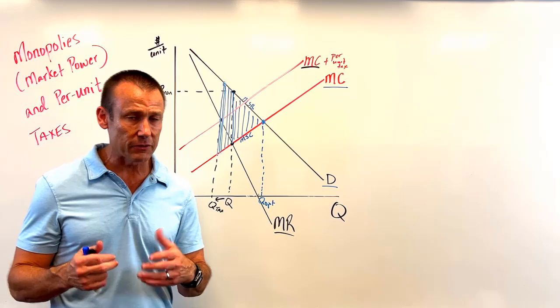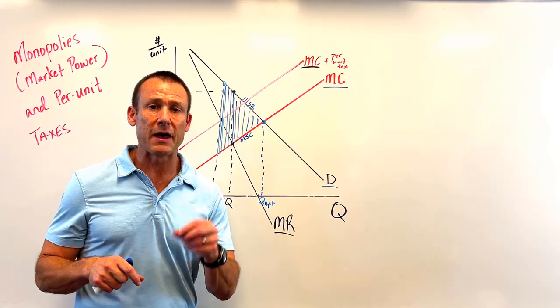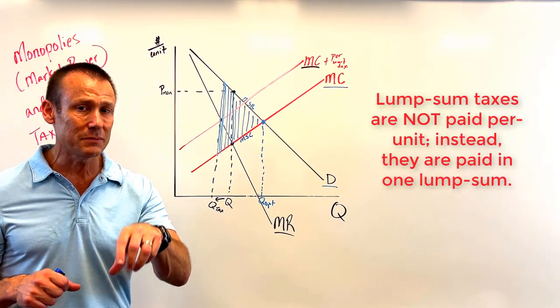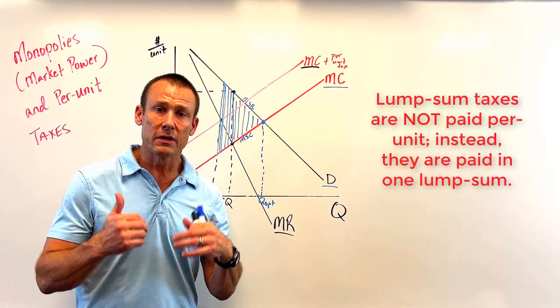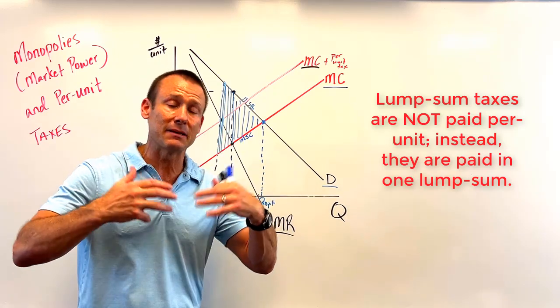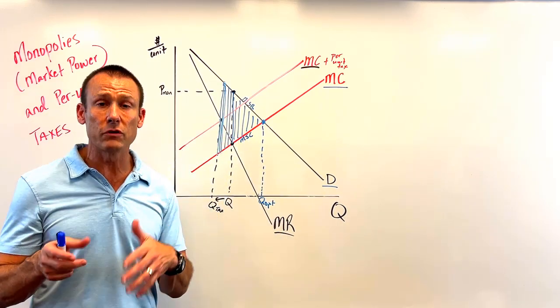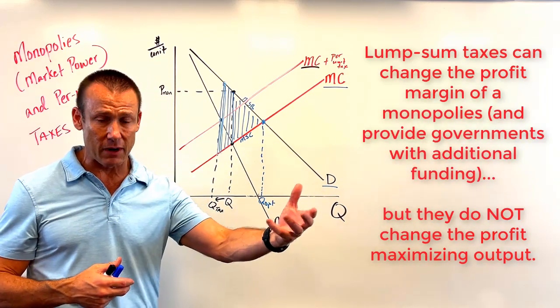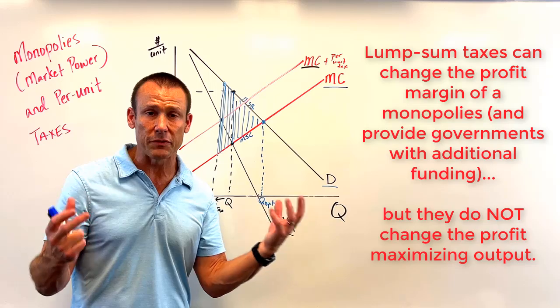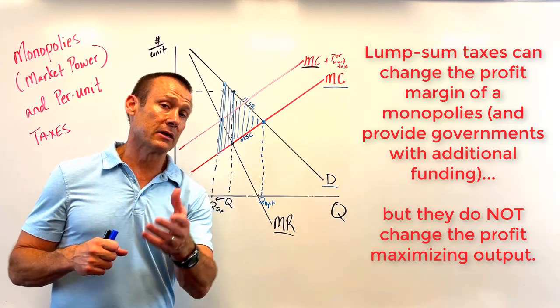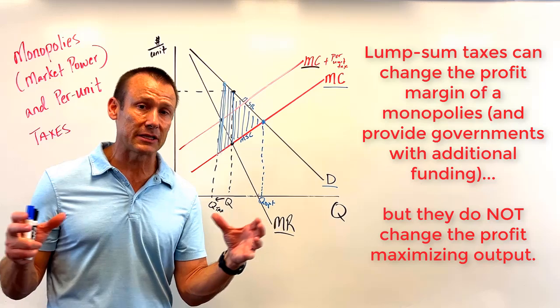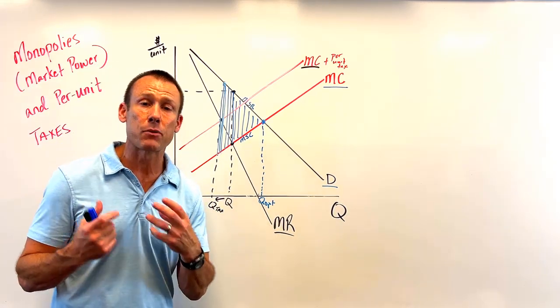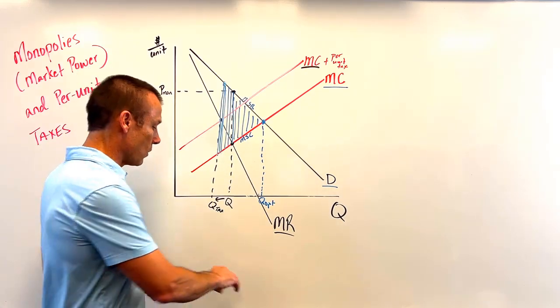There's other ways we can regulate it. I just want to talk about one potential one. This one isn't going to help out on the deadweight loss, but it certainly would cut into the profits if that's a worry of society. And that would be a lump-sum tax. If we did a lump-sum tax, what that would do is it would increase the ATC, and by increasing the ATC, you would reduce profits for the monopolist. And again, the government would have revenue to do things that we might want the government to do with that revenue.